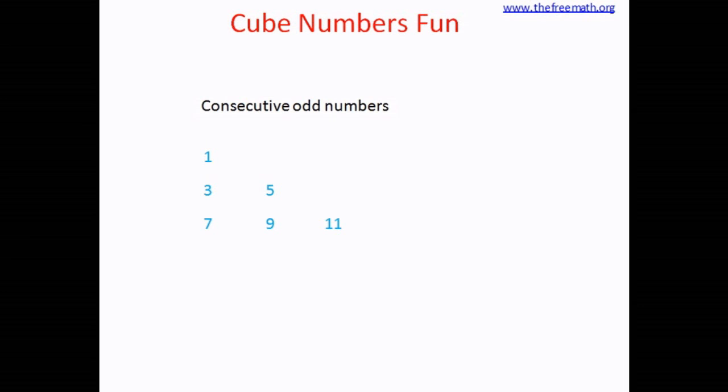We would write next 4 odd numbers which are 13, 15, 17 and 19.